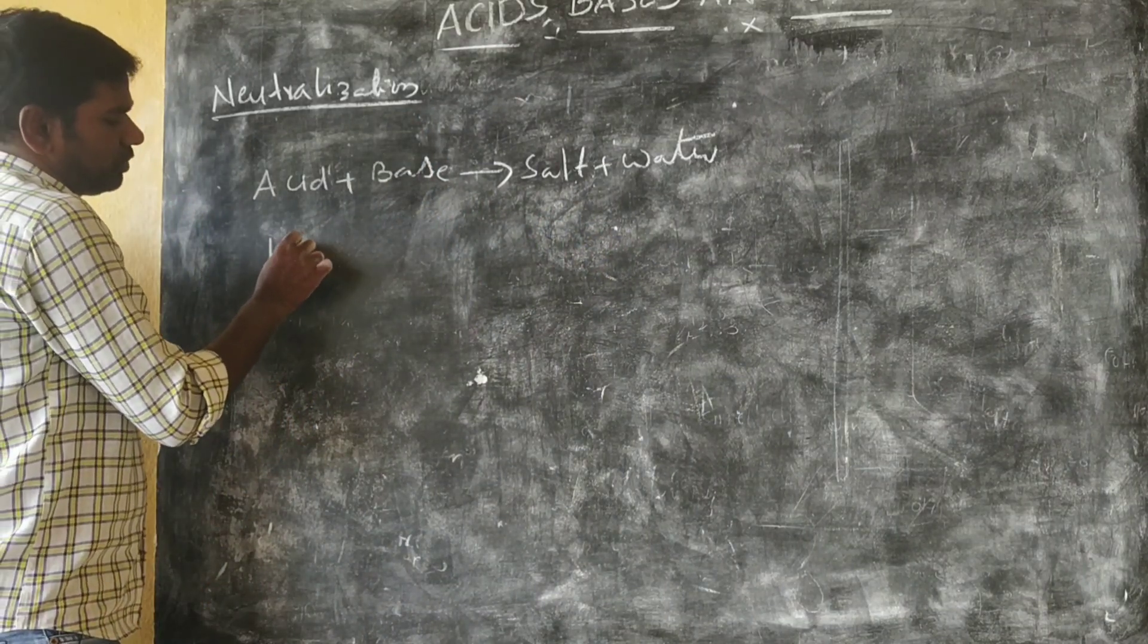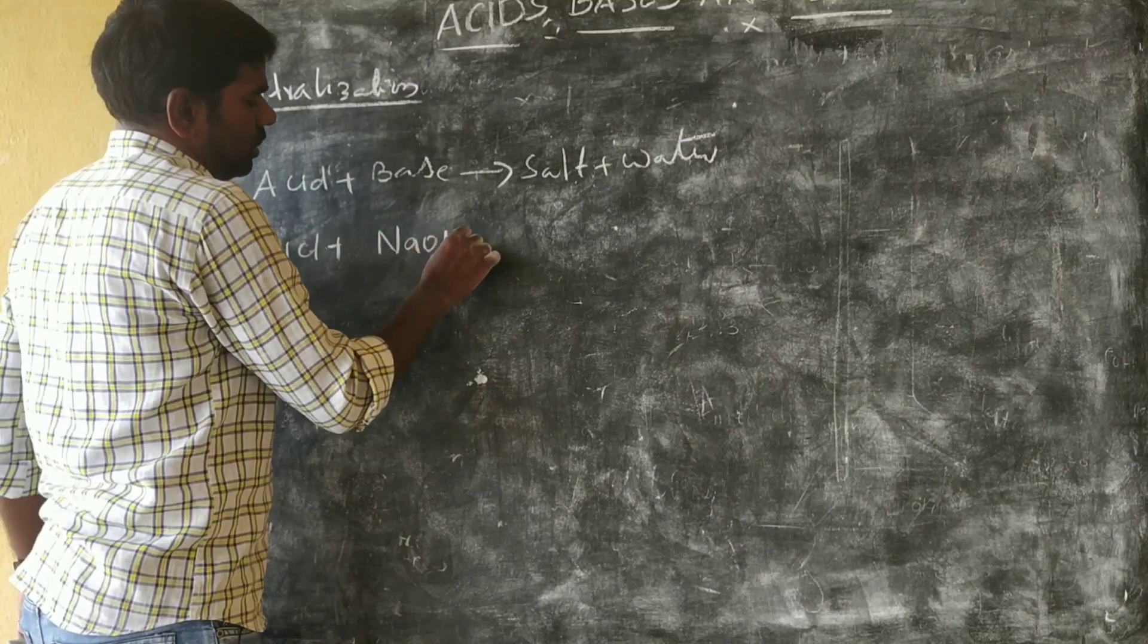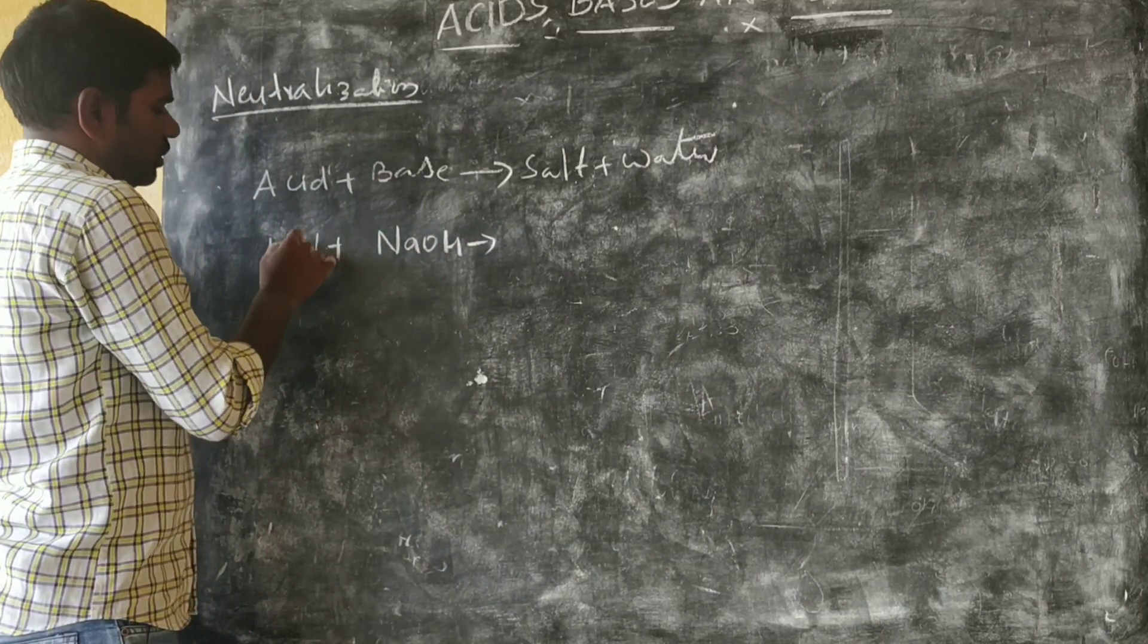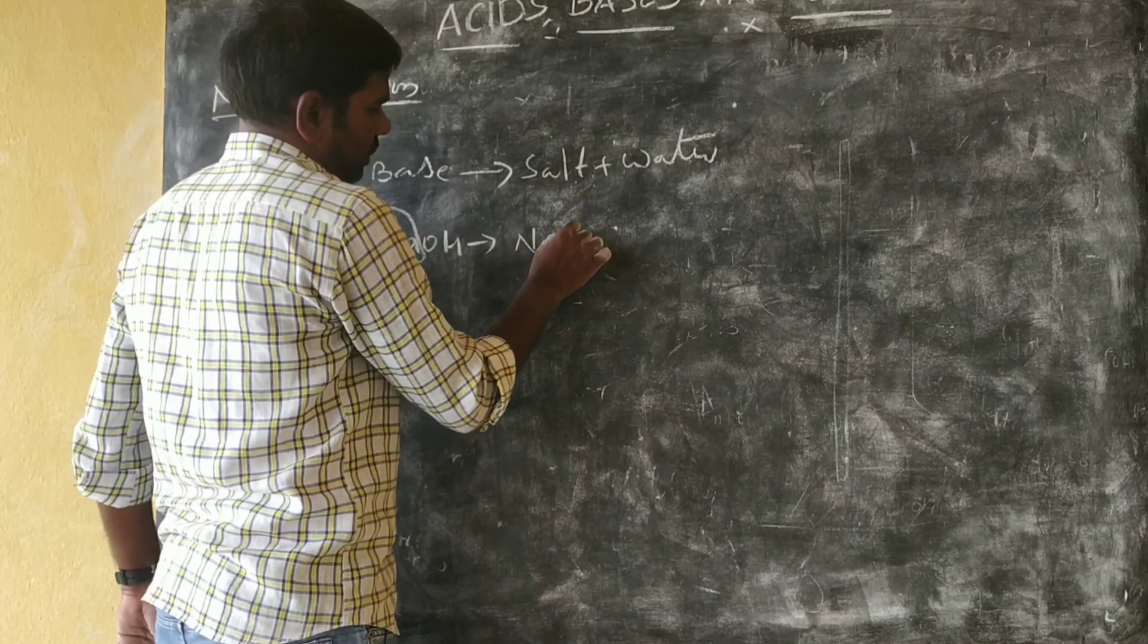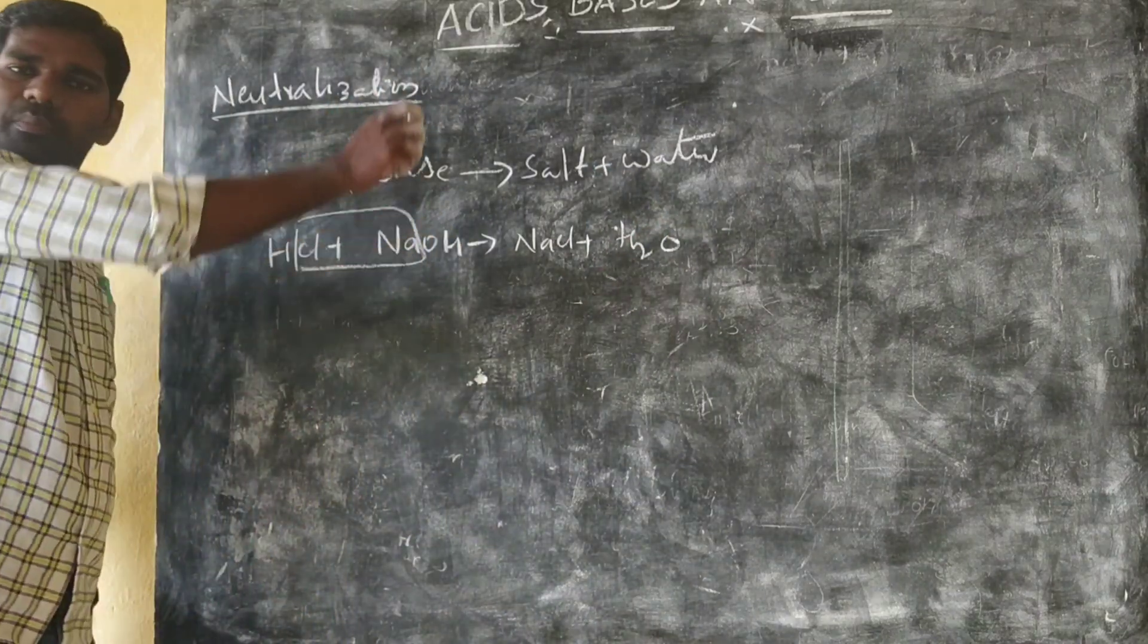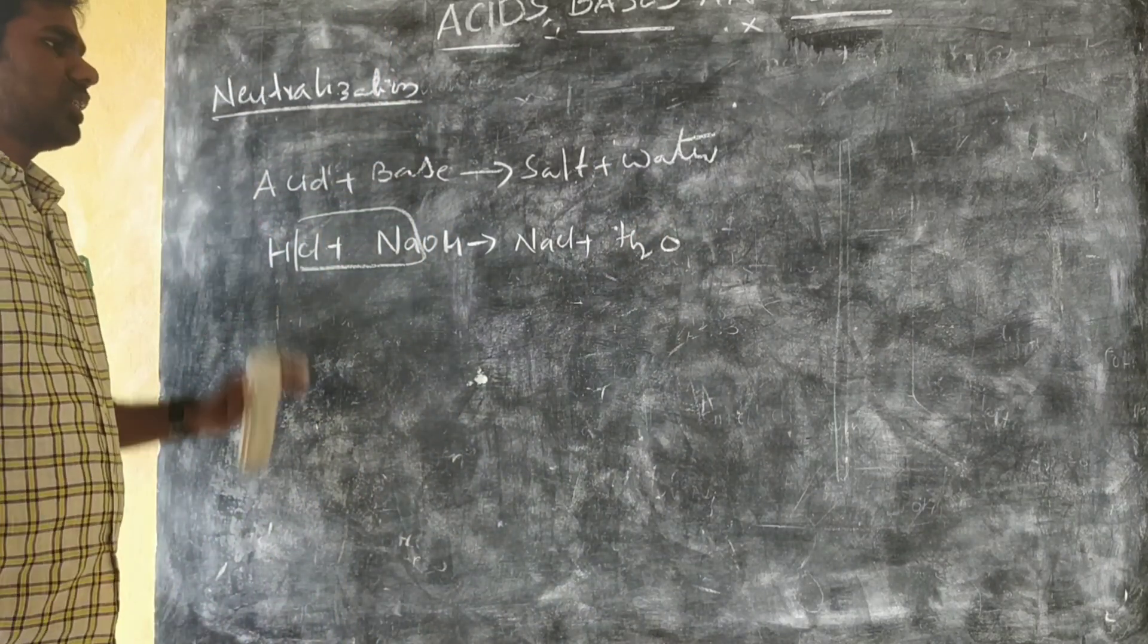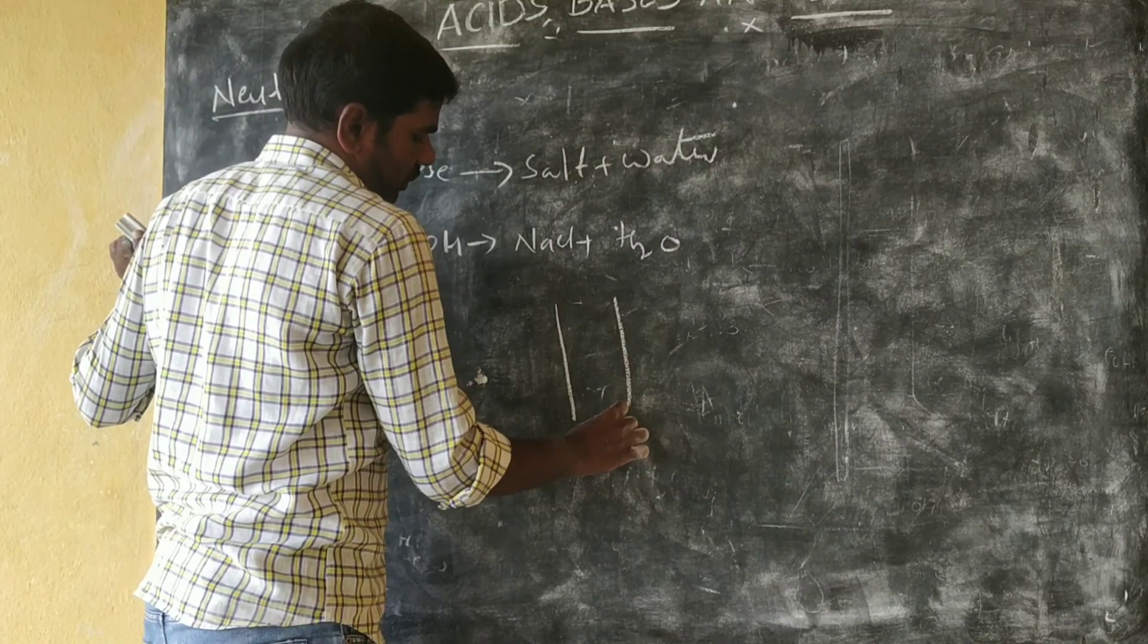Acid like HCl, base like NaOH. These two are combined to give salt, NaCl, plus water H2O. This type of reaction is called a neutralization reaction. Here we have a test tube.